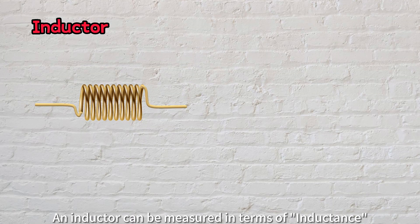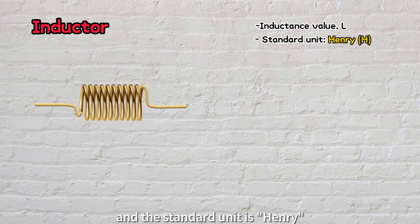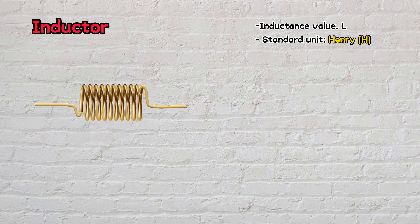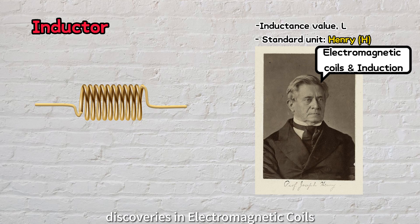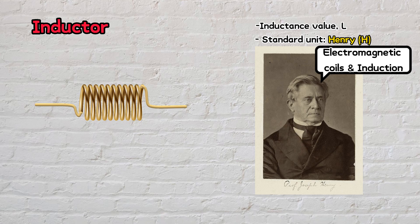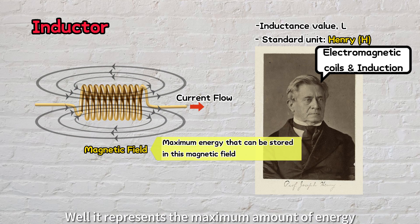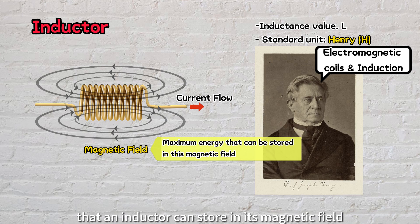An inductor can be measured in terms of inductance, and the standard unit is Henry. This unit is named after Joseph Henry, who has made remarkable discoveries in electromagnetic coils and induction. But what does the unit Henry actually tell us? Well, it represents the maximum amount of energy that an inductor can store in its magnetic field when electric current flows.